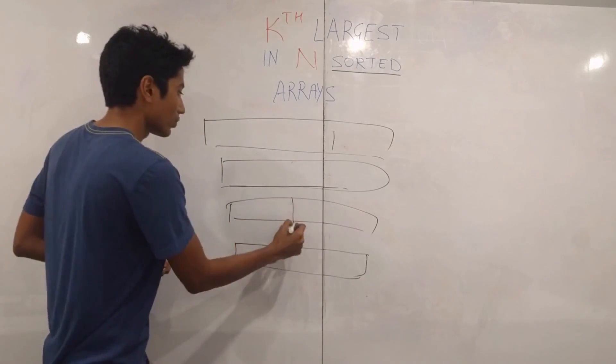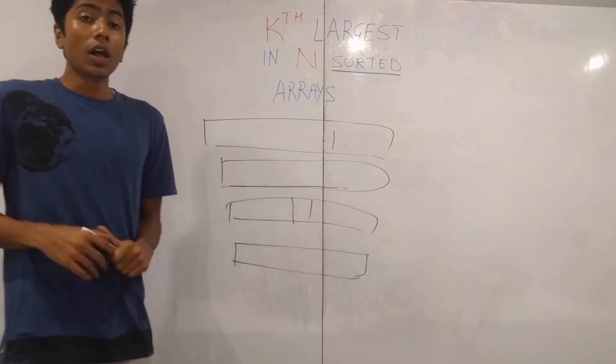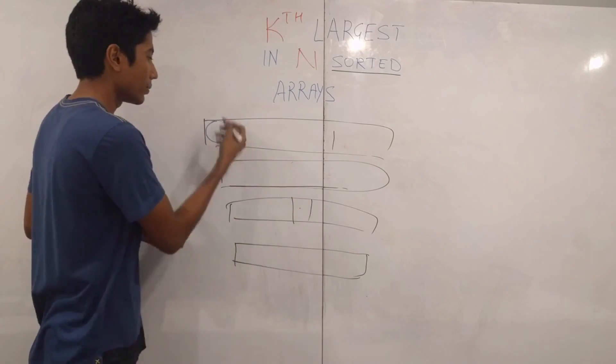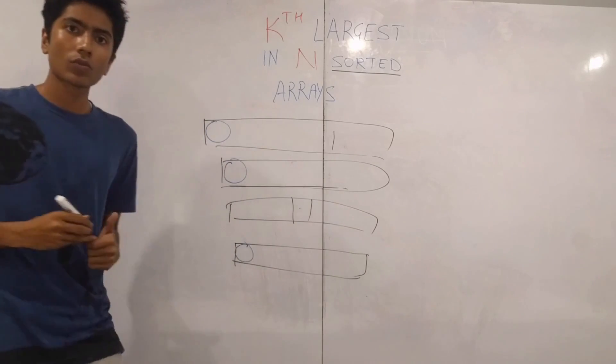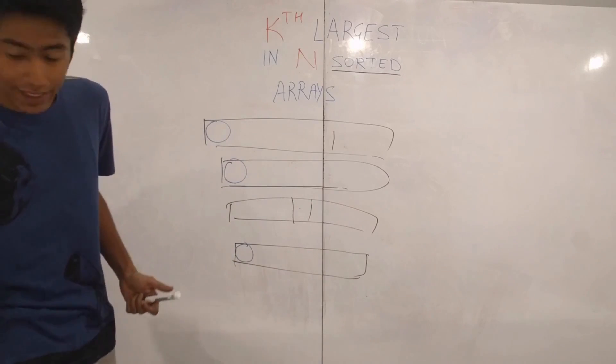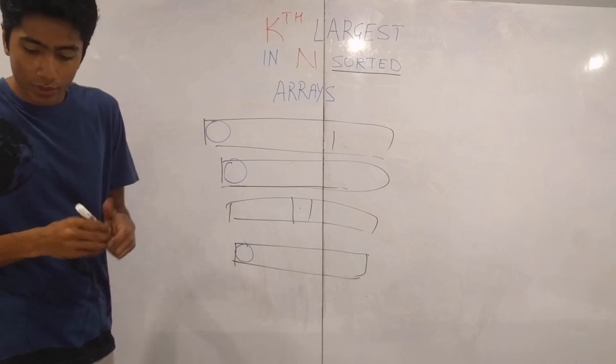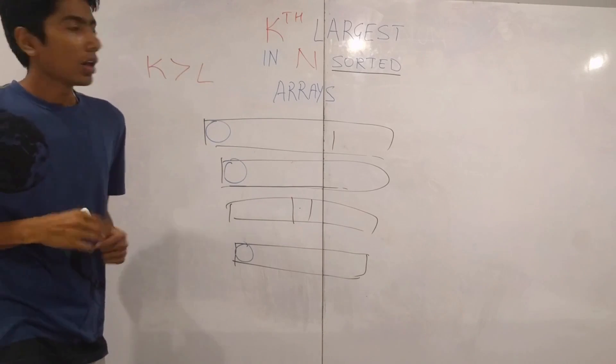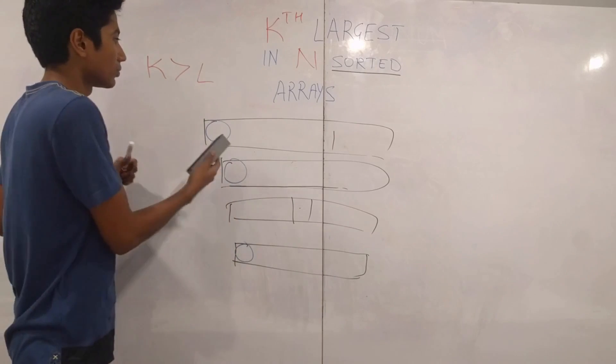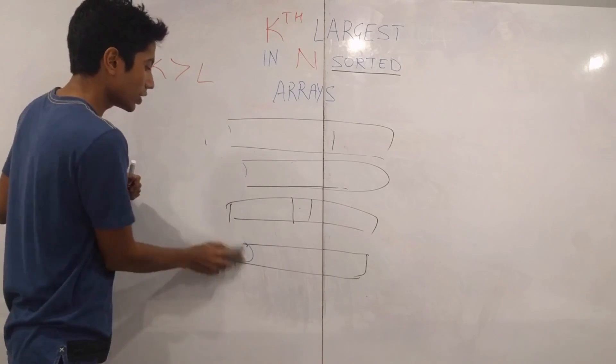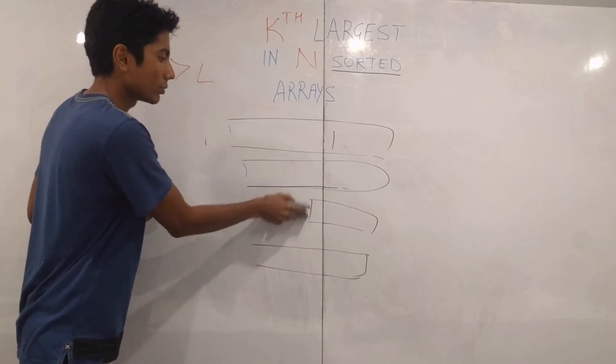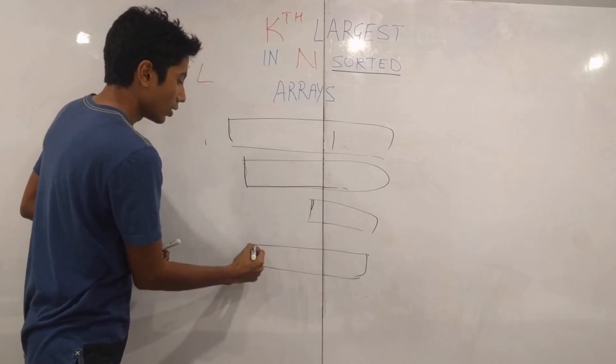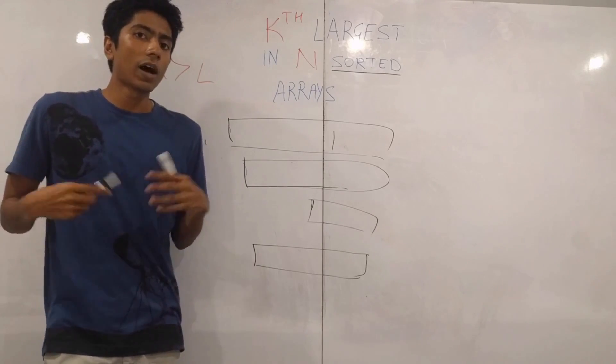So we have four of these arrays. And we take the largest array. Let's say you are really really unlucky. Let's say all the elements that you got after taking this element and binary searching were these. That's terrible. But the thing is, if again assume that you have k is greater than l. That's bad, but you got rid of one element from each array and you got rid of half the elements from this array.